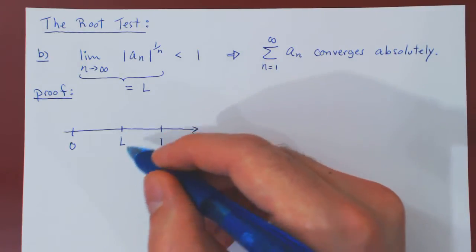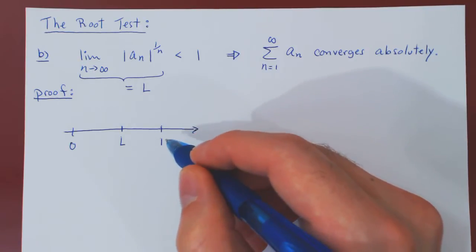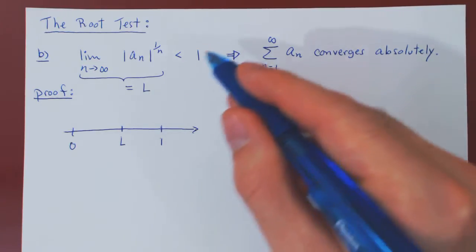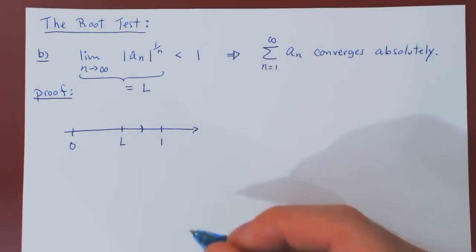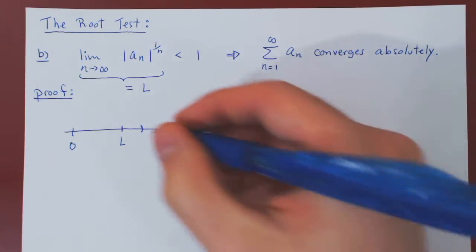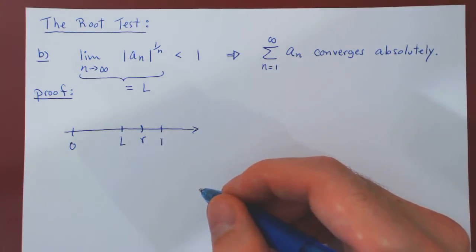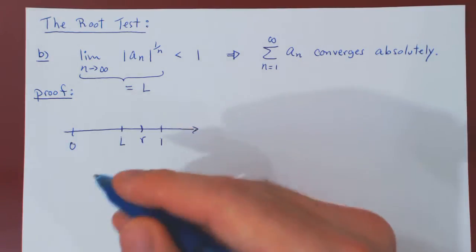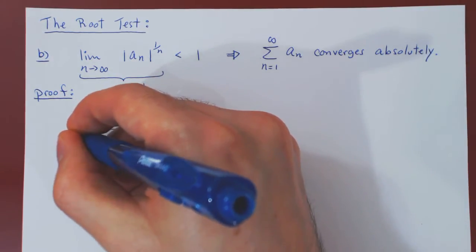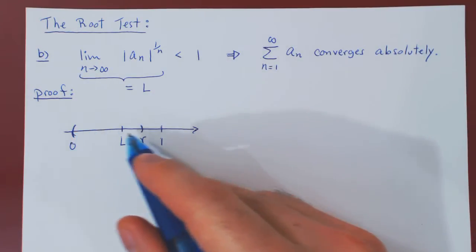Let's now construct a small interval around L where the right-hand point is strictly less than 1. As L is some real number less than 1, we can pick a real number between L and 1. Let's call this real number R. And we'll think of 0 being the left-hand point of our interval. So we take the interval around L, beginning at 0, ending at R.